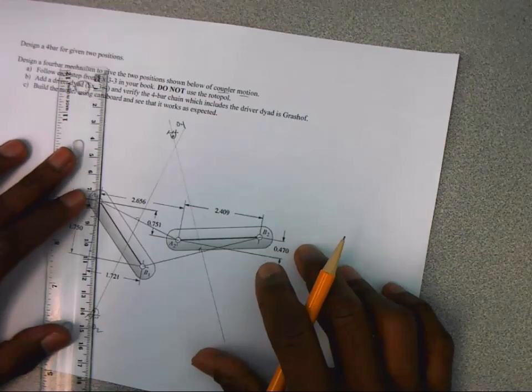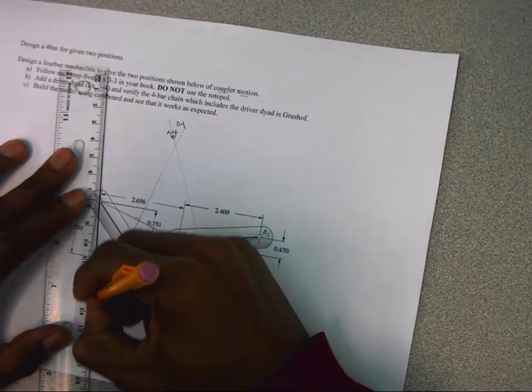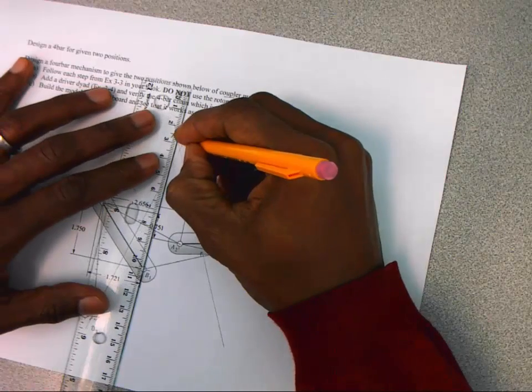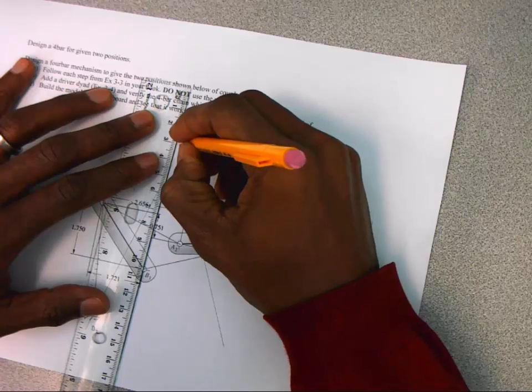O2 connects to A1. I'm going to connect that one here. And O4 connects to B1. I'll draw that one here.